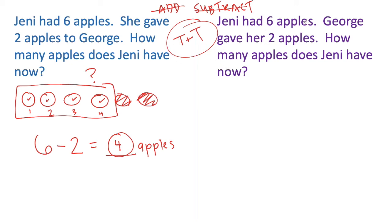Even though these stories sound really similar — they both have Jenny, they both have six, they both have two, they both have George, they both ask how many apples Jenny has now — they are not the same. That is why it's so important that we pause to make sure we really understand our stories.